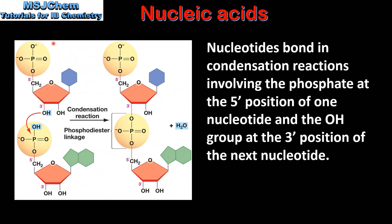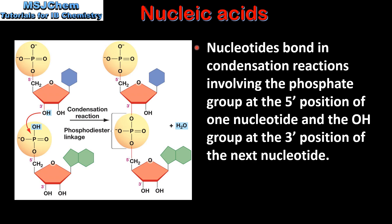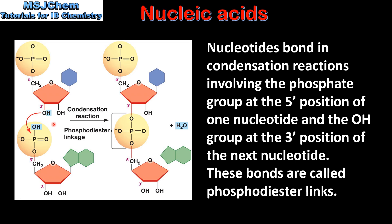In the previous slide we looked at the bonding within the nucleotide; now we look at the bonding between the nucleotides. Nucleotides bond in condensation reactions involving the phosphate group at the 5' position of one nucleotide and the OH group at the 3' position of the next nucleotide. So here we have the phosphate group which is bonded at the 5' position and here we have an OH group on carbon number 3, which is also known as the 3' position. We have a condensation reaction involving this hydrogen atom with this OH group to produce a molecule of water. These bonds are known as phosphodiester links. So on the right we have a sugar phosphate backbone which is composed of nucleotides joined in condensation reactions.